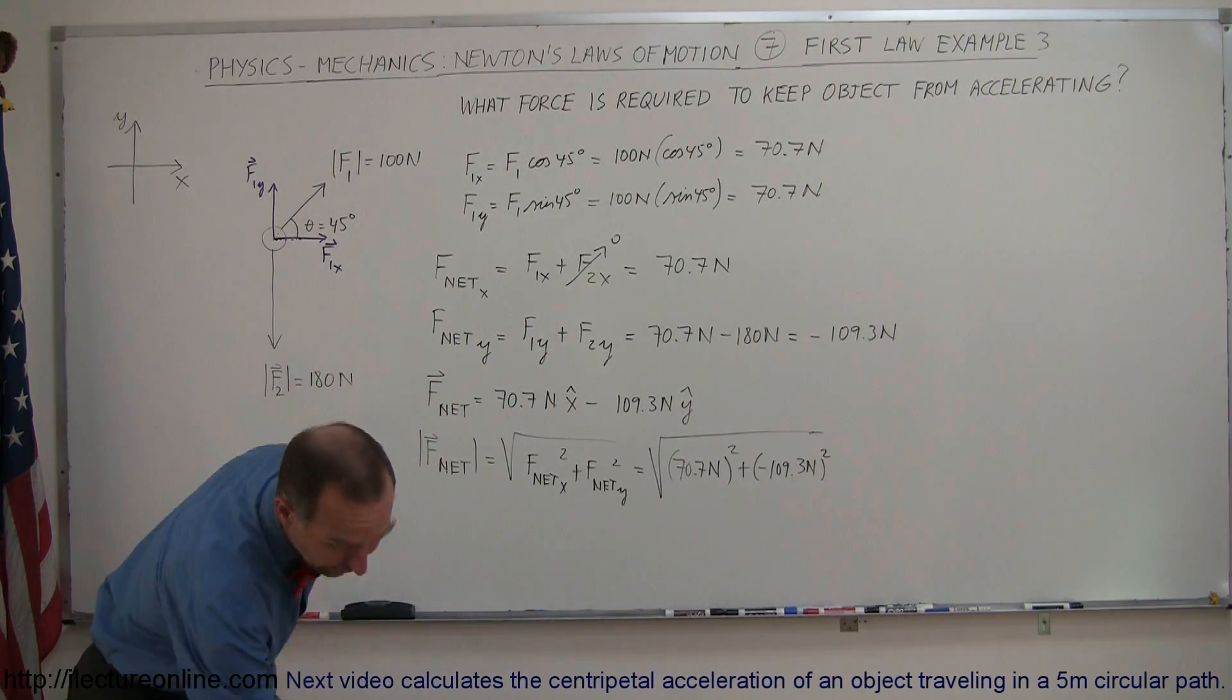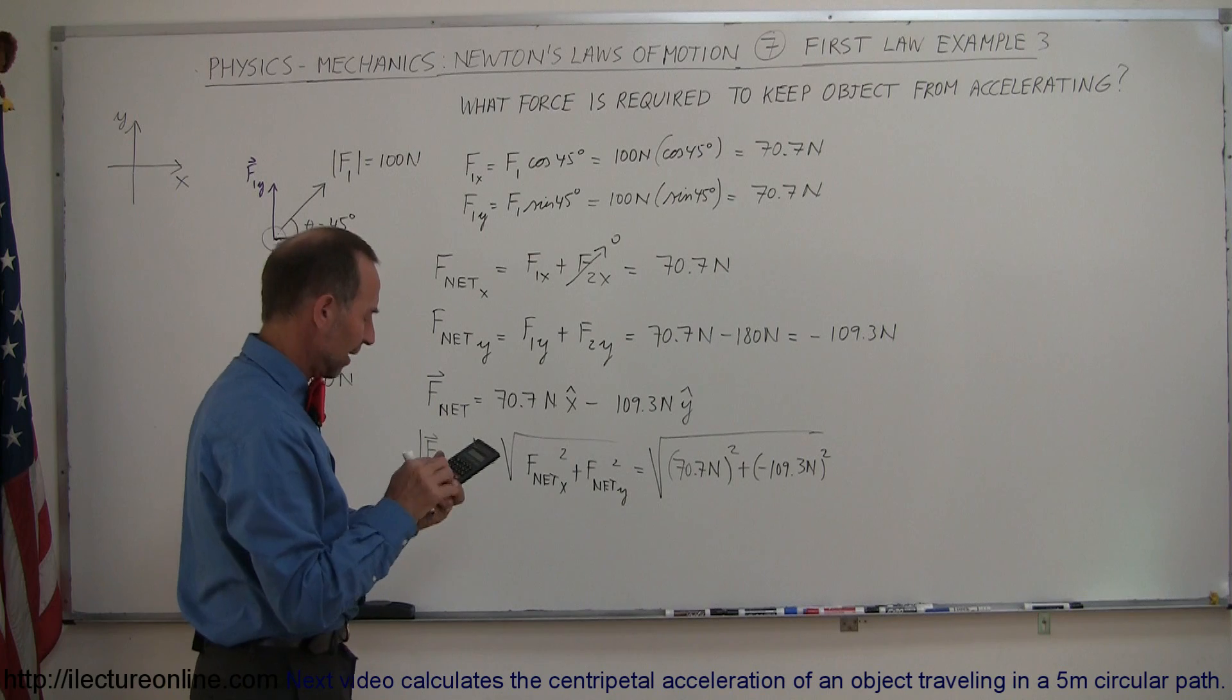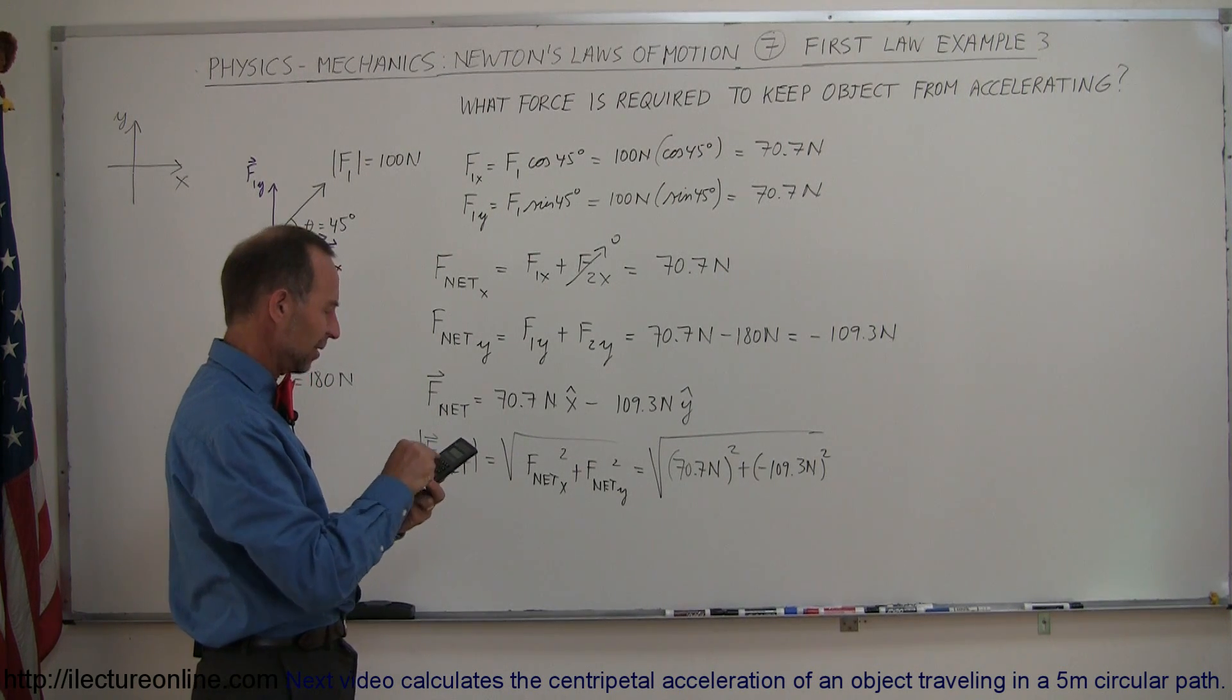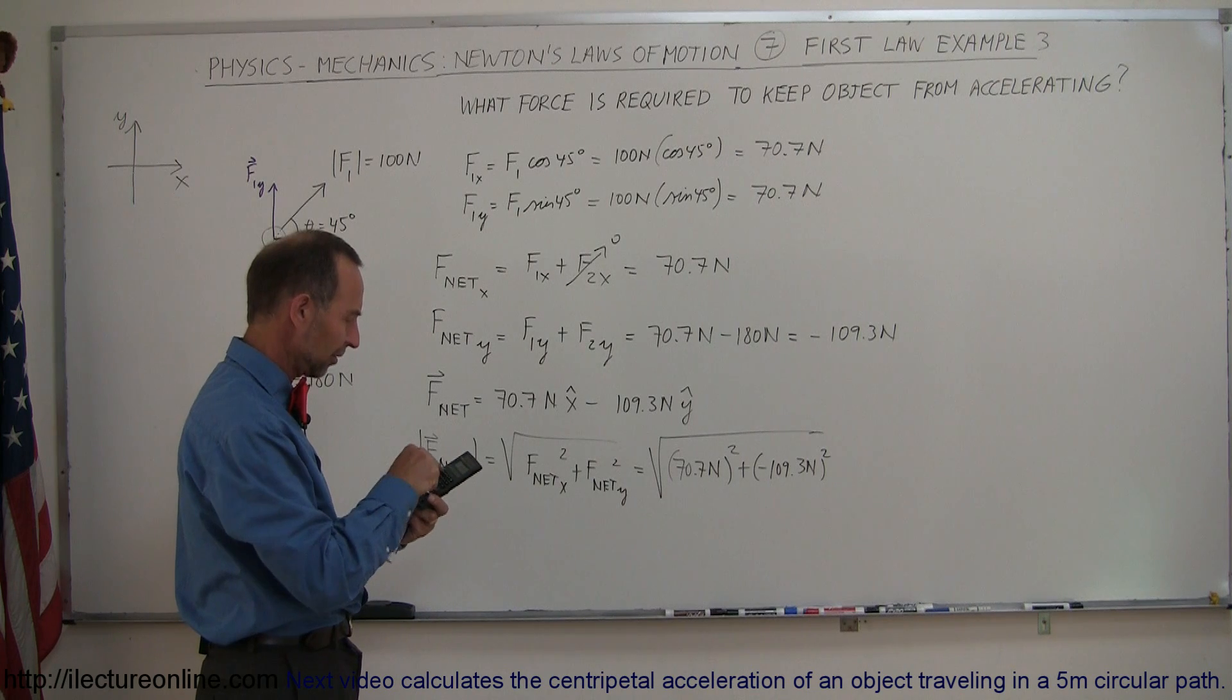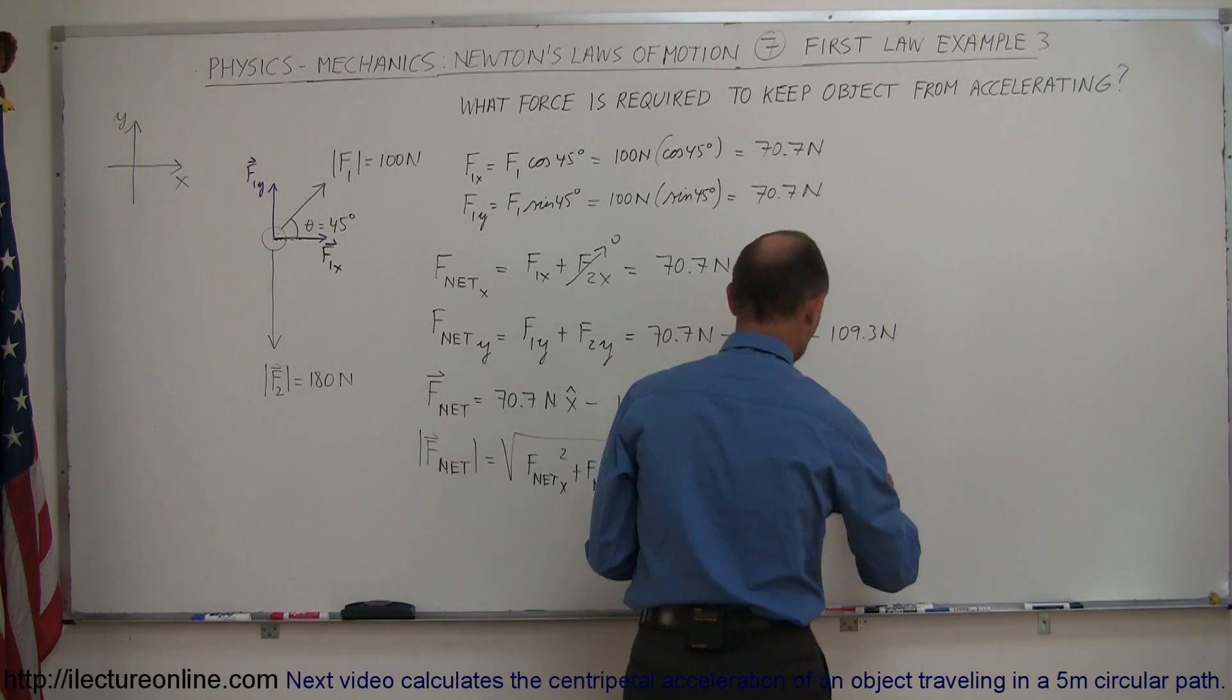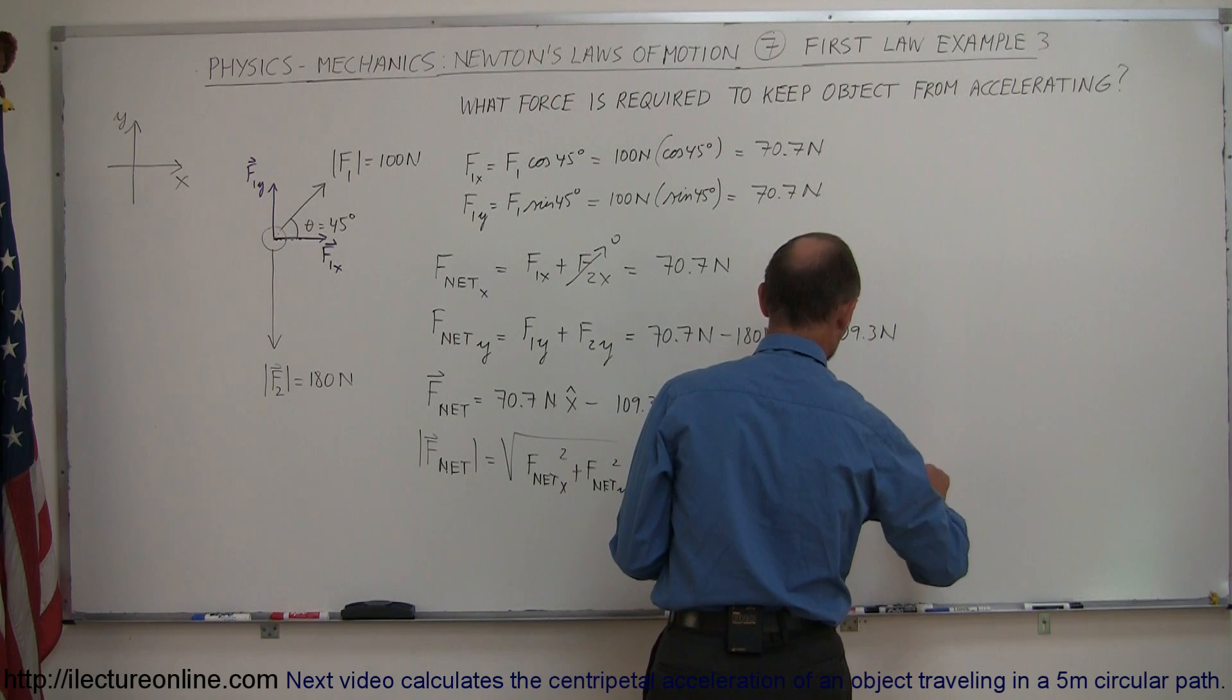Of course, it doesn't matter, it's negative because we're squaring it anyway. So we have 109.3 squared plus 70.7 squared equals, take the square root, and we get 130 Newtons.